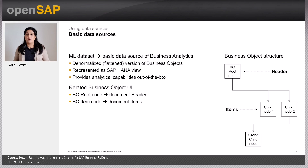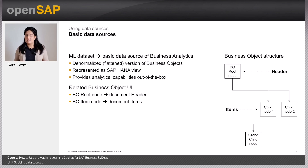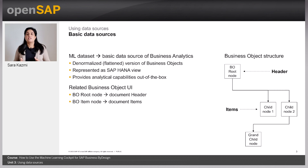Every data source requires an anchor node, which determines the unique identifier or key field of the data. That's why there is one basic data source for sales quote header and another one for sales quote item. Due to the one-to-many relationship of header and item, the header-level data source cannot include information from the item level. On the other hand, item-level data sources can include information from their header level, so in the sales quote item data source, we will also find fields from the sales quote header.